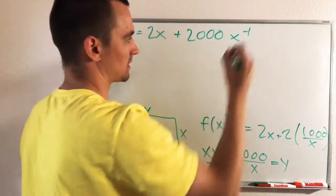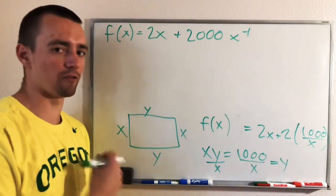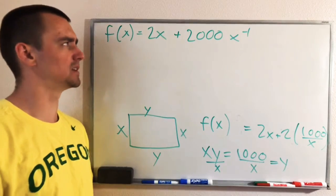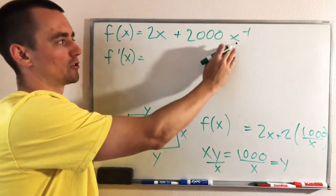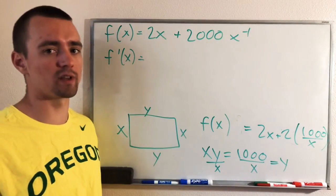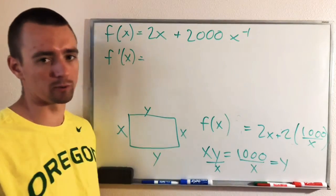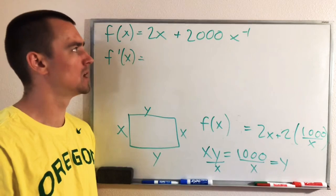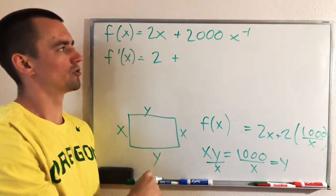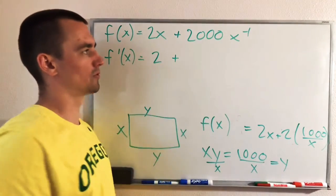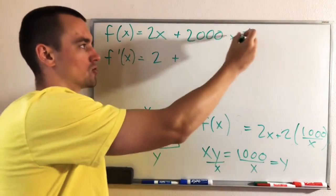And that just makes it easier to find the derivative because now we can find the derivative of this term with the power rule instead of using the quotient rule, which we would have to use if it's in a fraction. So the derivative of 2X is just going to be 2. And then the derivative of 2,000 X to the negative first is just going to be power rule.